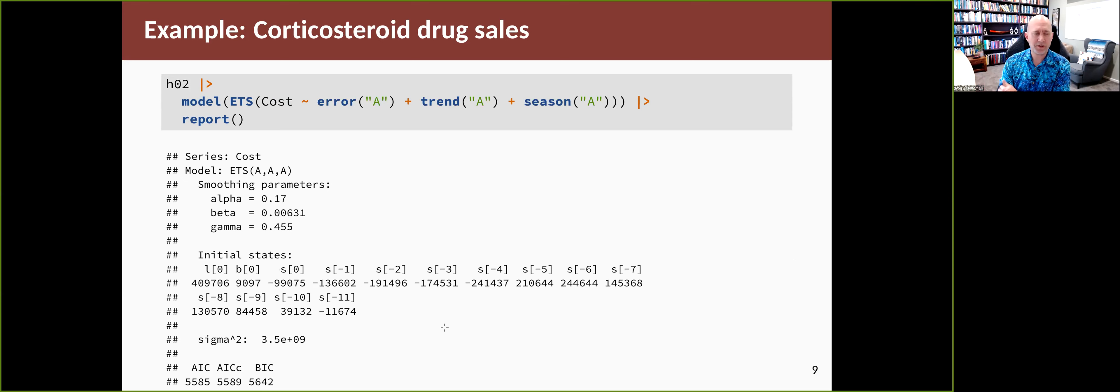What if we had chosen a model? What if we'd said we really want an AAA model—additive error, additive seasonality, and additive trend? Then it comes back with this set of parameters, a little bit different, still a small beta because the trend is still close to linear, but other things are different.